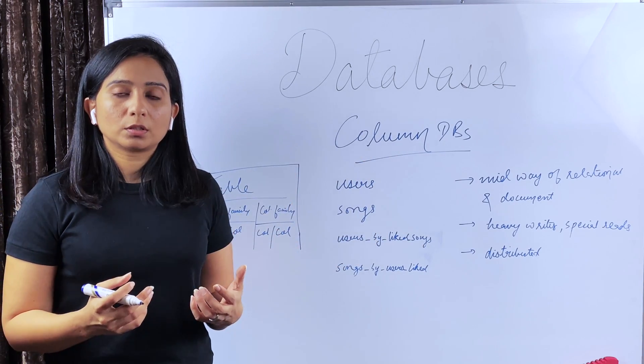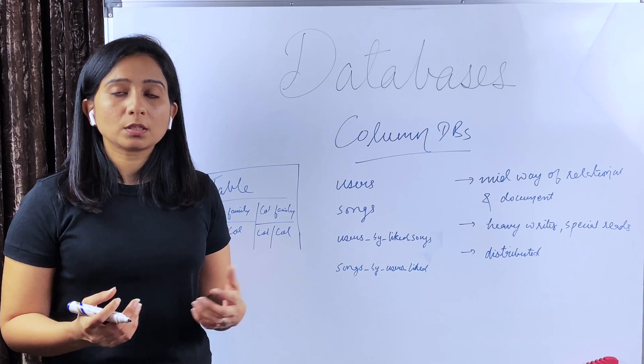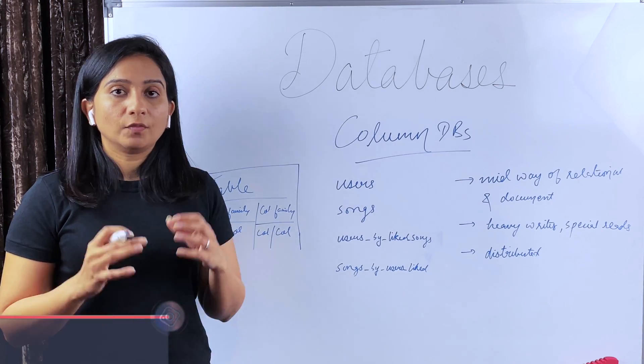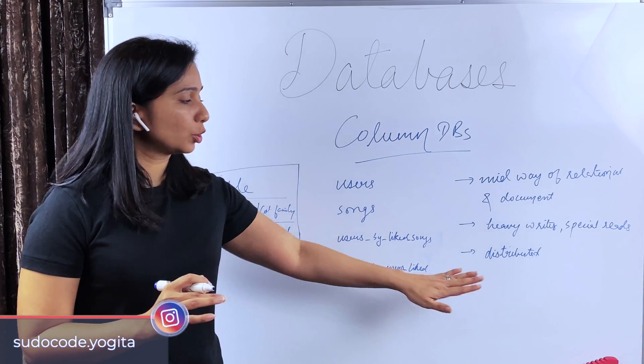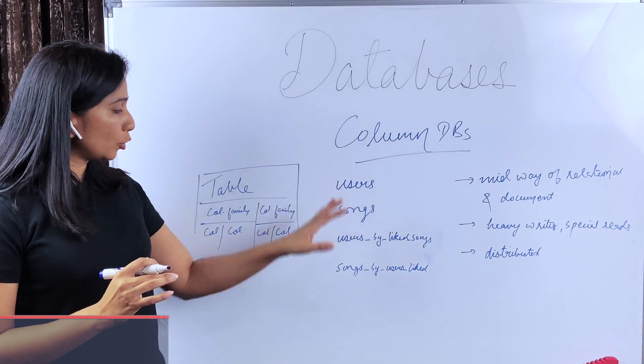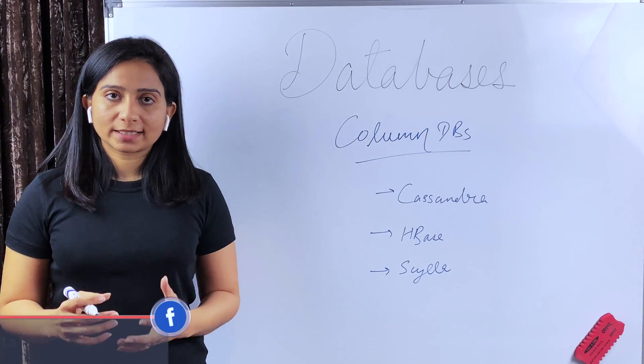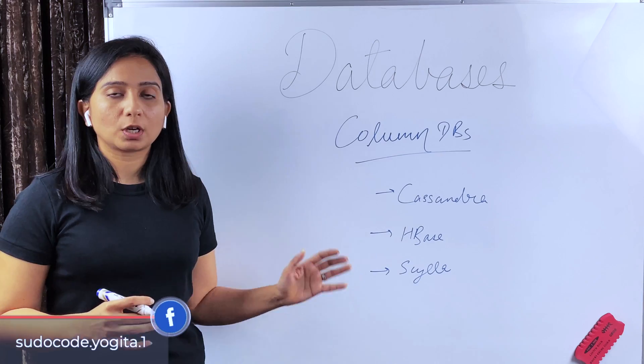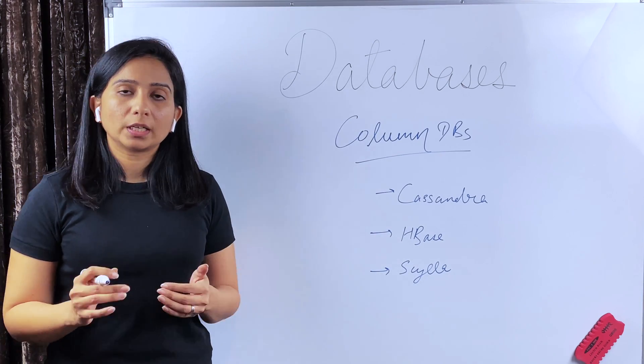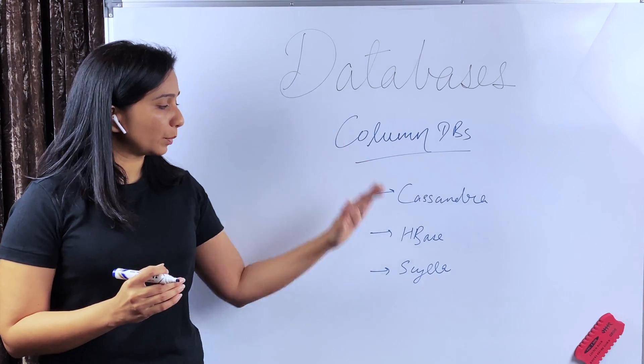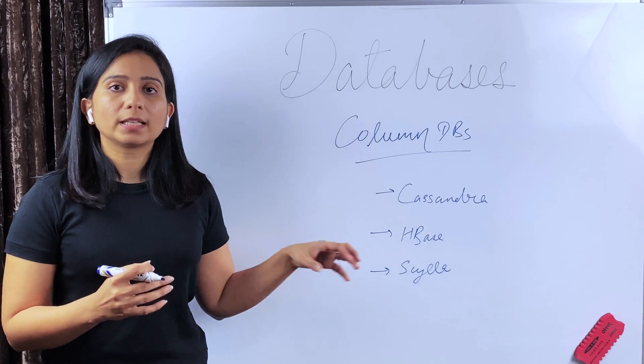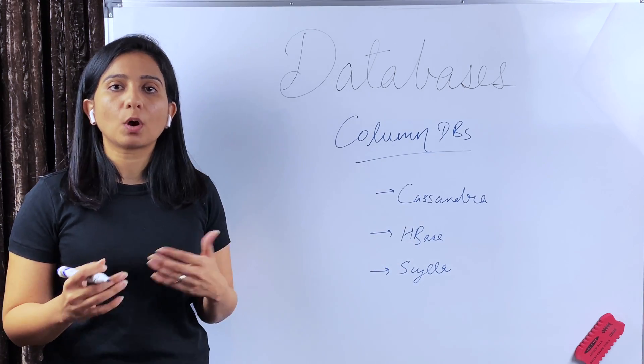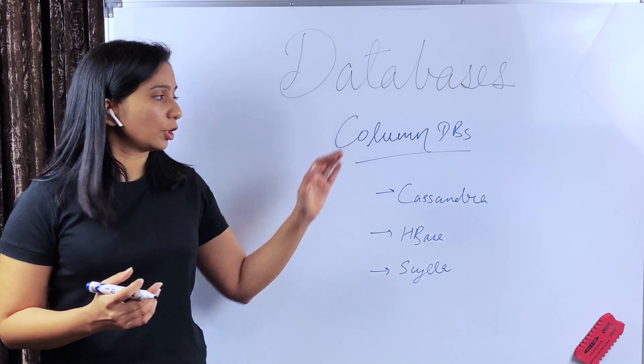Also, column DBs are a good supporter of distributed databases. If you don't know what are distributed databases, we will have a dedicated video on distributed DBs where we will dig into more of this in detail. Some popular examples of column DBs are Cassandra, HBase, Scylla, etc. In the description, I have linked companies which use these databases and some more examples and use cases so that you understand how different companies are using these DBs.